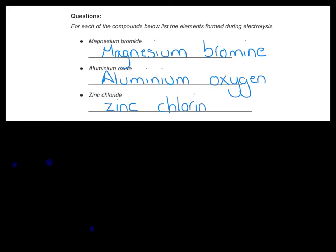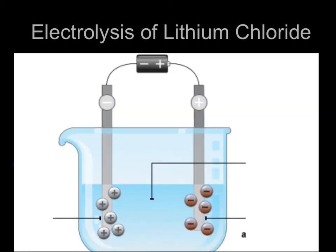Anything that we decompose by electrolysis will break up like this. Now the example that we've got to consider in our lesson today is the electrolysis of lithium chloride. We've got a diagram very similar to the one we had for lead bromide, so we're going to add some labels to this diagram. The first label we're going to add is on the top left — there is our power supply, and remember that can be a battery or it can be a power pack.